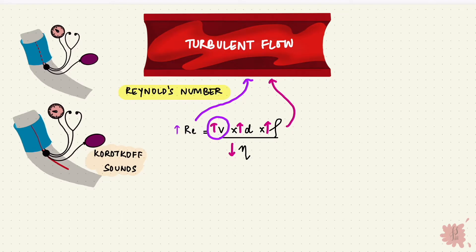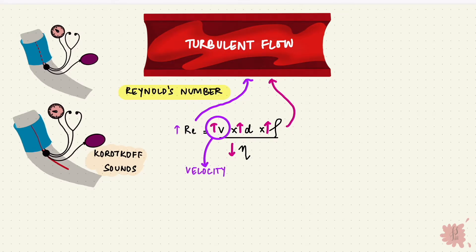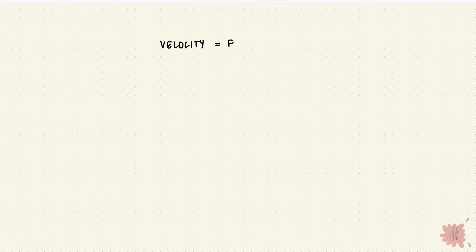Now one of the factors was velocity. And the velocity of blood depends upon the flow and the cross-sectional area. The flow through circulation is the cardiac output. And if that's constant, the velocity is inversely proportional to the cross-sectional area.